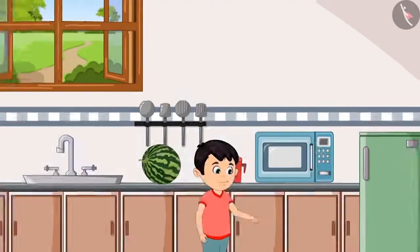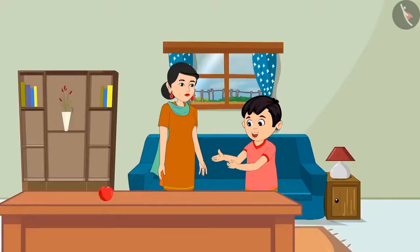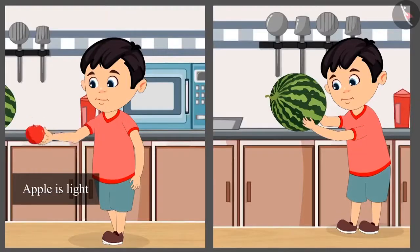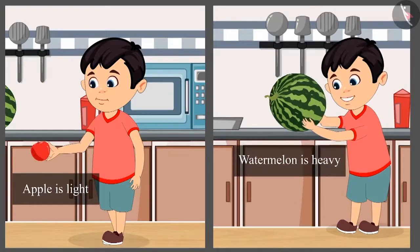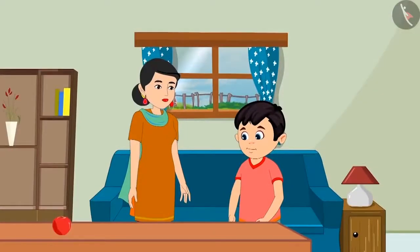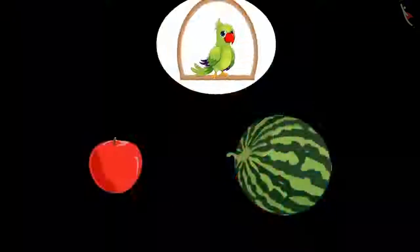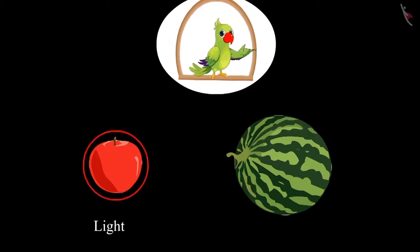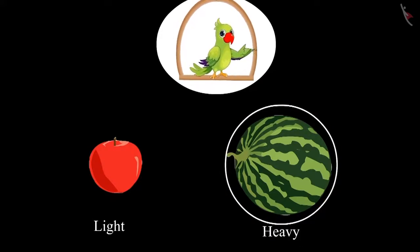Chotu goes to his mother and says, 'Mummy, I am not able to lift the watermelon.' His mother explains, 'The apple is lighter than the watermelon, so you picked it up. But the watermelon is heavier than the apple, that's why you couldn't pick it.' So children, did you see? Chotu could pick up the apple because it was light, but he couldn't lift the watermelon because it was heavy.